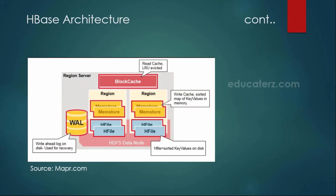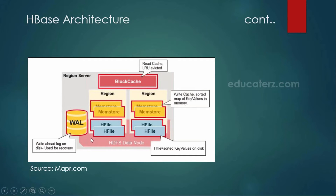Looking in depth at your region servers — the region servers consist of multiple regions. To understand how fault tolerance works: if one of the machines goes down, whatever data is in your MemStore — that is in memory — the same copy is also stored as part of your Write Ahead Logs. These Write Ahead Logs keep writing into your HDFS. So if the machine goes down, you can still get that WAL information from your HDFS and recover whatever lost data was in the MemStore. This is how your data is stored as part of your region servers in HBase.